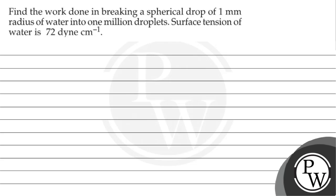Hello, so let's see the question. The question says: find the work done in breaking a spherical drop of 1 mm radius of water into 1 million droplets. The surface tension of water is 72 dynes per centimeter. So how much additional work done is needed to find it?